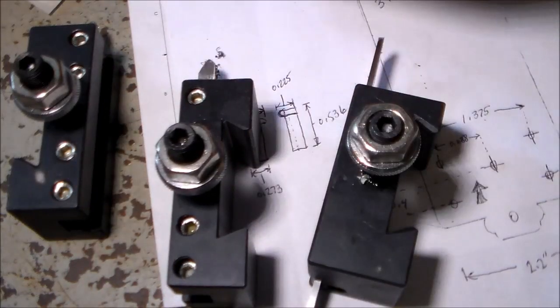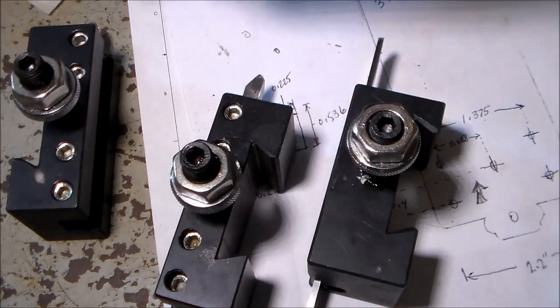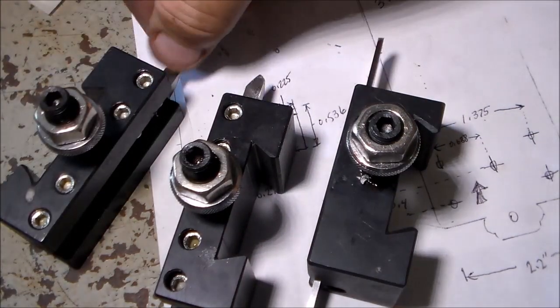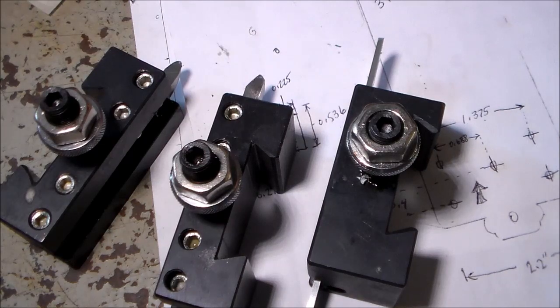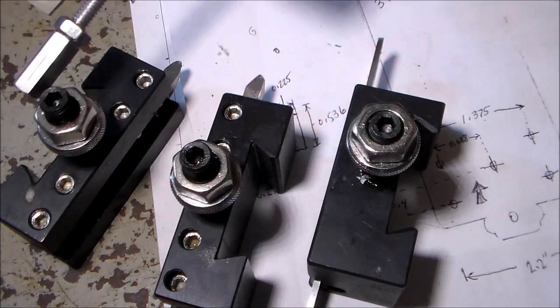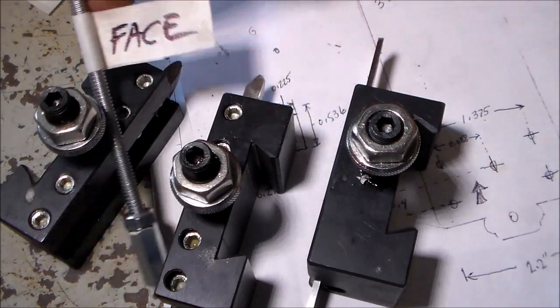This is just a normal turning tool. This is kind of a universal turning tool I ground just for facing. So this is what I made. These are carriage stops.